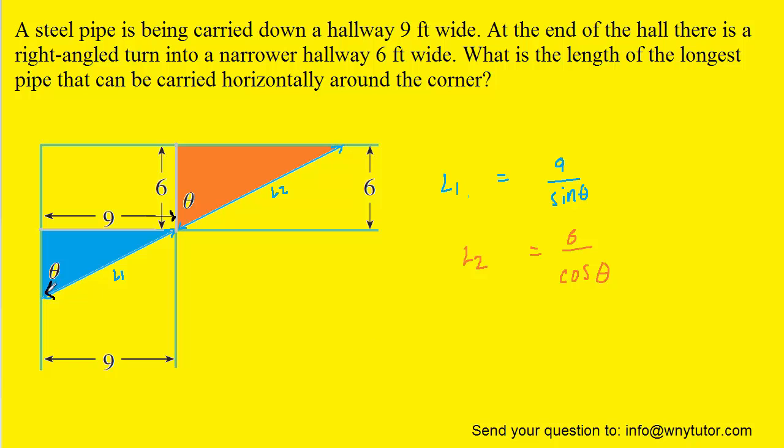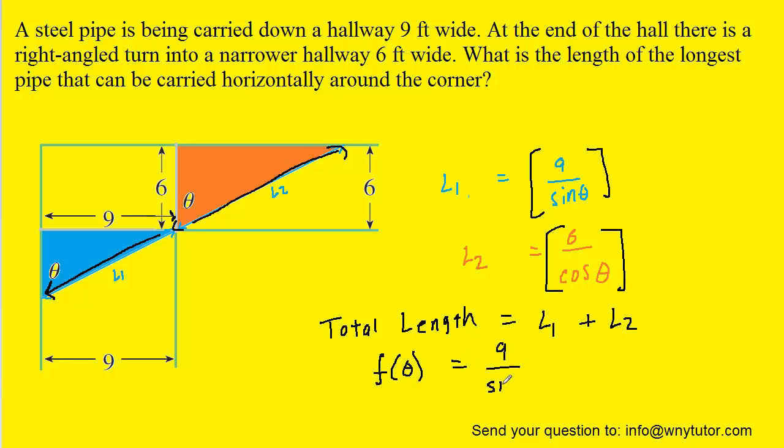Notice that the total length of the pipe would be simply the L1 added to the L2. And of course, we just came up with expressions for L1 and L2, so we're going to plug them in. Notice again that because L1 and L2 are in terms of theta, we can write the total length as a function of theta. So then we'll replace L1 with 9 over the sine of theta. And then we'll replace L2 with 6 over the cosine of theta. This gives us our equation that we're going to try to optimize.